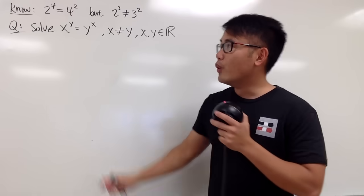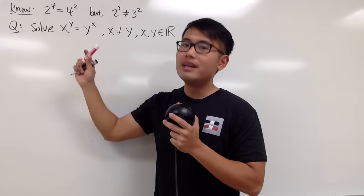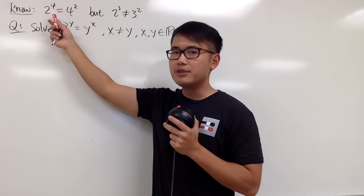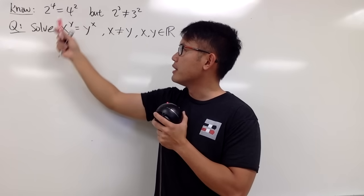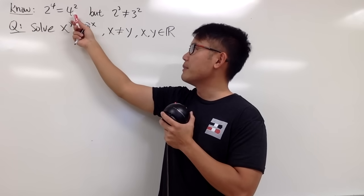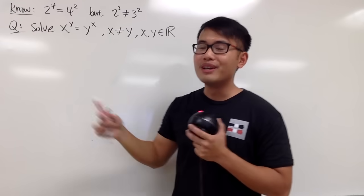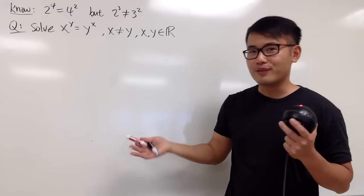I know many of you guys know this already. When we have 2 to the fourth power, this is actually pretty interesting because you get to switch the base and the exponent, and this is actually still the same as 4 to the second power because they are both equal to 16.